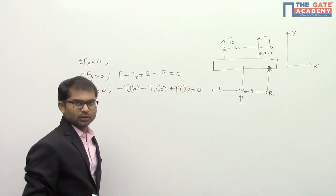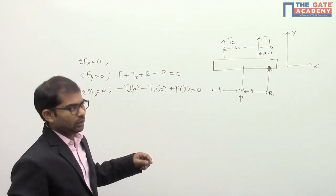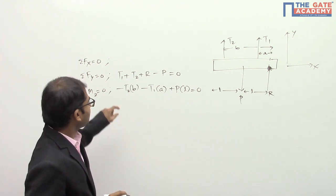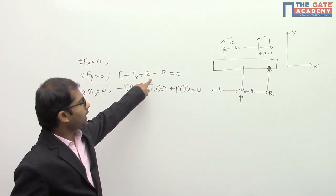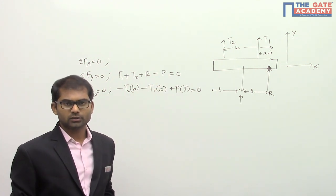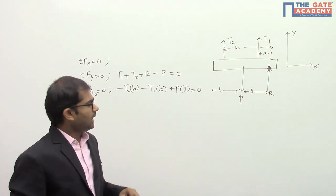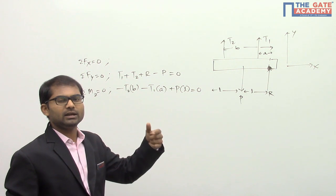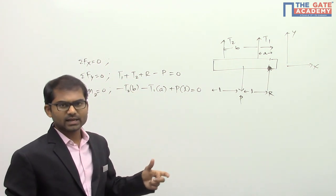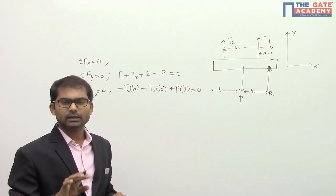Looking at the equilibrium equations, we have only two equations but more than two unknowns. T1 is unknown, T2 is unknown, and R is unknown — only P is given. With three unknowns and two equations, we cannot solve and get the answer. To evaluate T1 and T2 we also need R, so we need an extra equation.